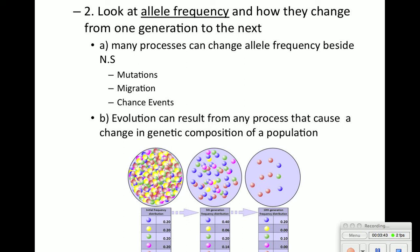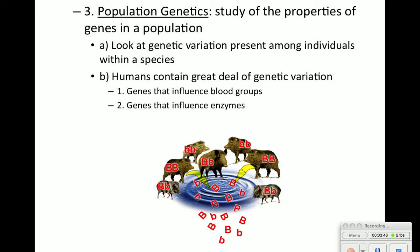We call this study population genetics, where we study properties of genes in a population and look at genetic variations among different individuals within a species. Humans have a great deal of genetic variation — different blood types, genes that influence different enzymes. For example, if you're lactose intolerant, you're lacking an enzyme to break down lactose. We can call the collection of all alleles in a population a gene pool.